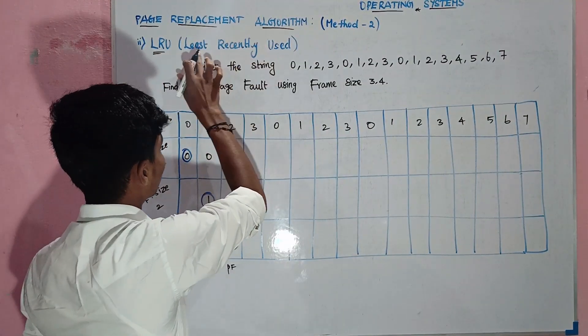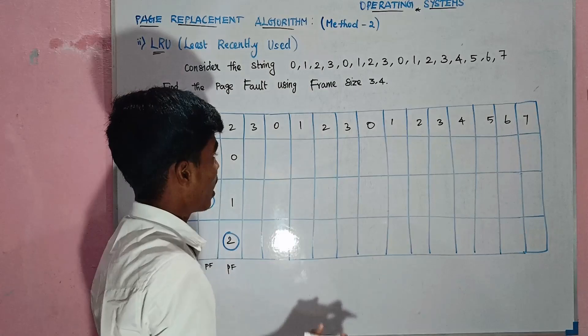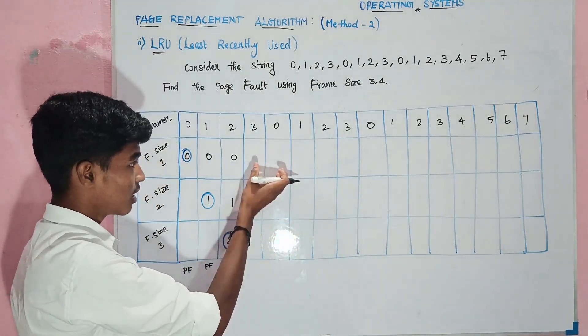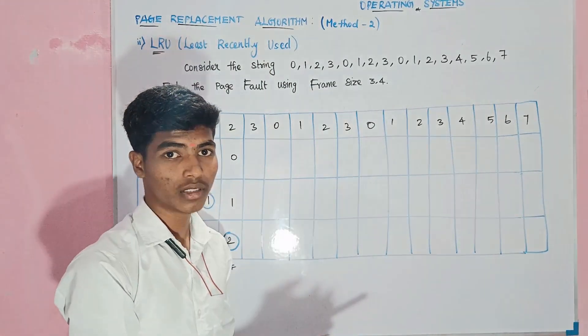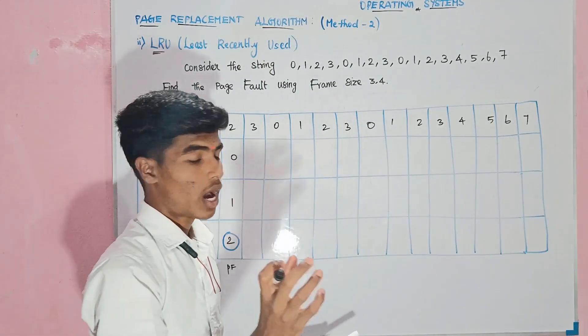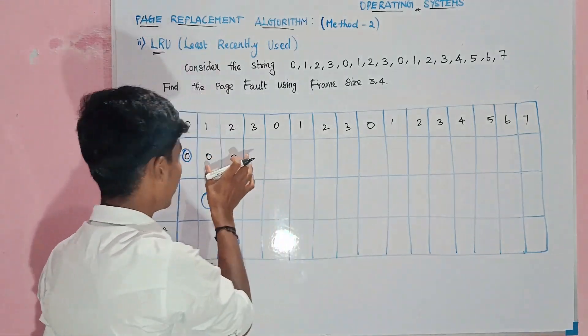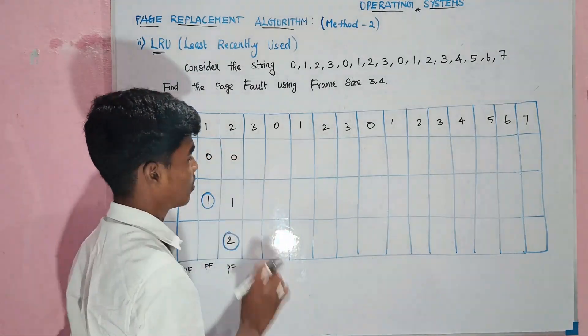Number 3: insert method — that is Method 2, Least Recently Used (LRU). We can use this method.